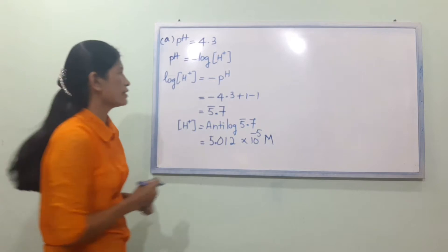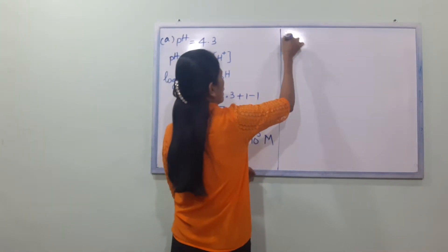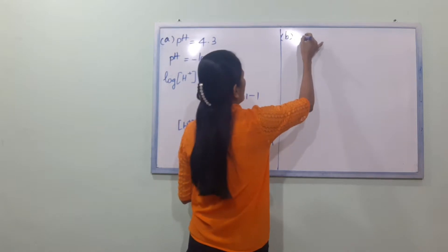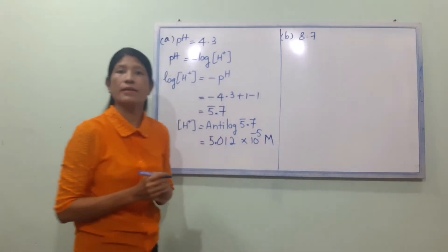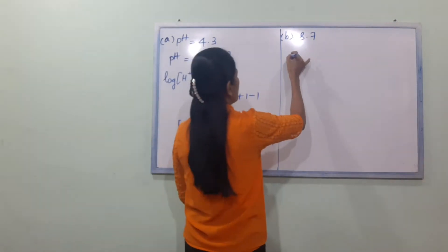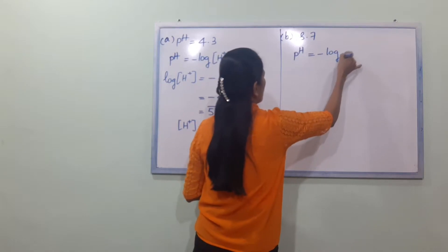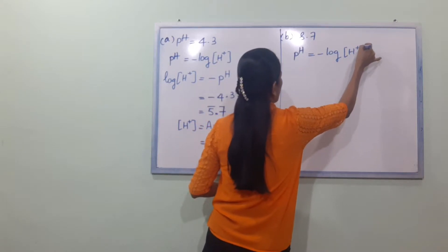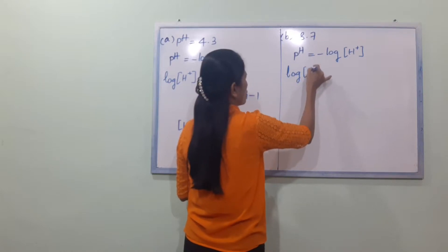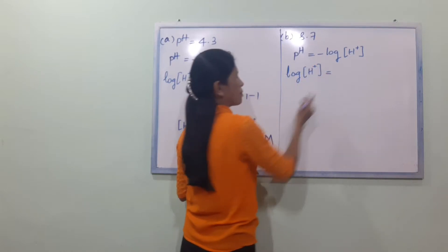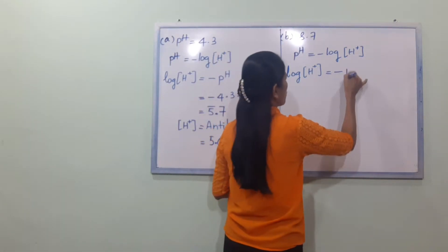Now let's take a look at B. pH equal to — using the formula: pH equal to minus log H plus ion concentration. So if H plus ion concentration is the same as the pH, we apply the formula.